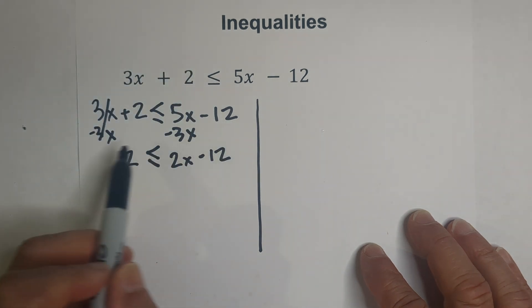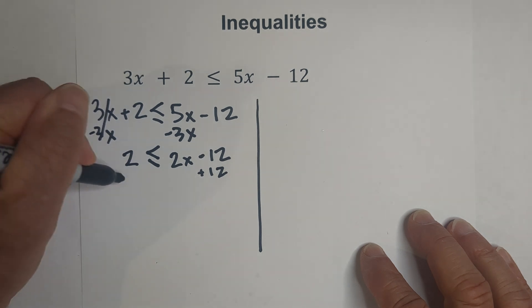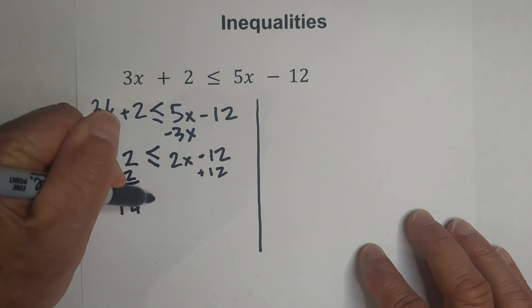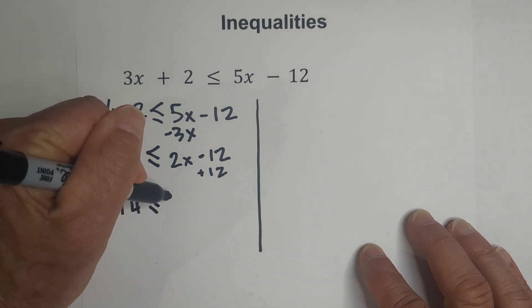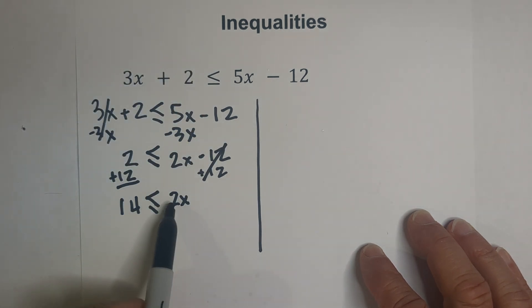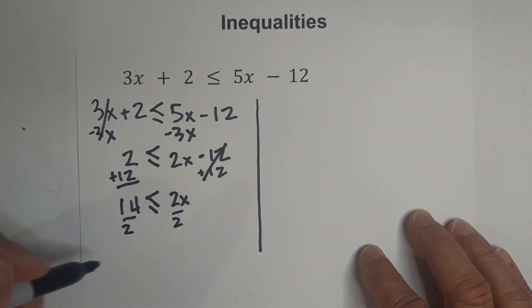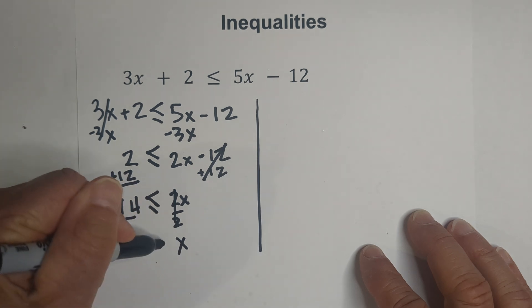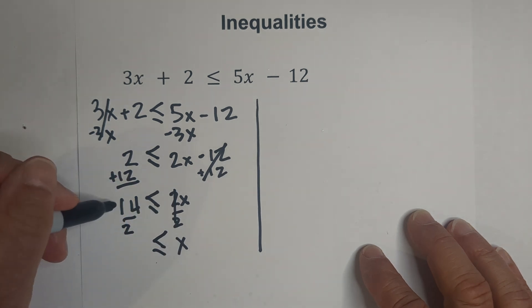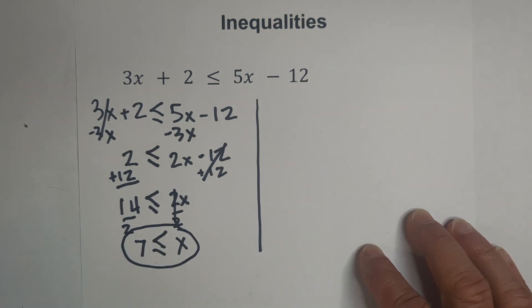I need to move this constant to the left, so I'm going to add 12 to both sides. This equals 14, and then we have 2x because these cancel. Notice that we do not have any negative numbers. I'm then going to divide through by 2. These cancel. That gives me x is greater than or equal to 14 divided by 2 is 7. So here's the first answer.